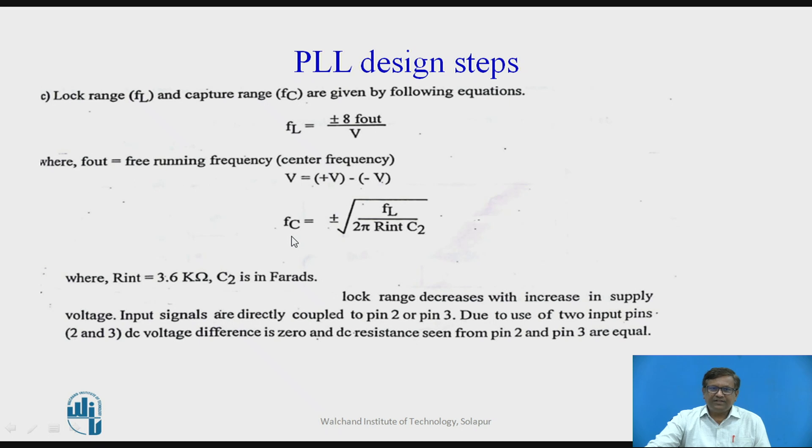Capture range frequency FC is under root FL divided by 2 pi R int C2, where R int is the internal resistance which is used to form a low pass filter which is 3.6 K multiplied by C2.